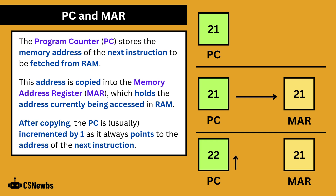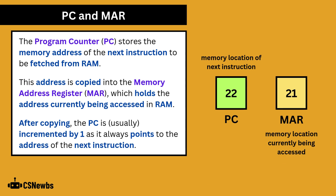I say 'usually' because it may change to a different value for a branch instruction, which we'll look at in the assembly language videos in section 2. Students often get confused between the PC and the MAR. The easiest way to remember it is that the PC holds the address of the next instruction, and the MAR holds the address of what you are accessing right now — and that could be an instruction you are fetching or it could be data if you're reading or writing.